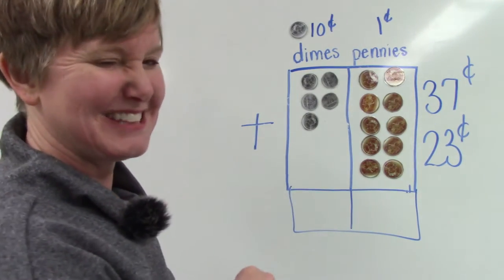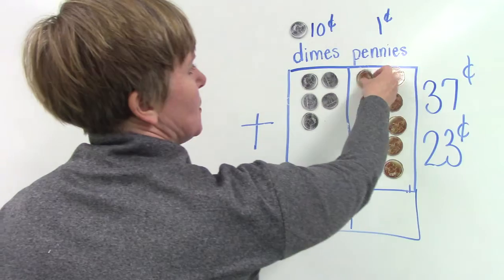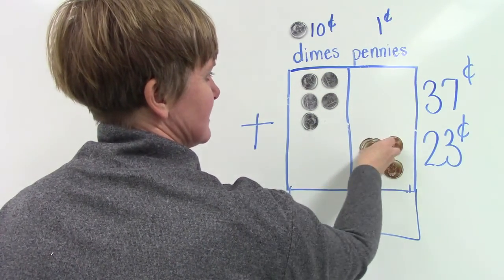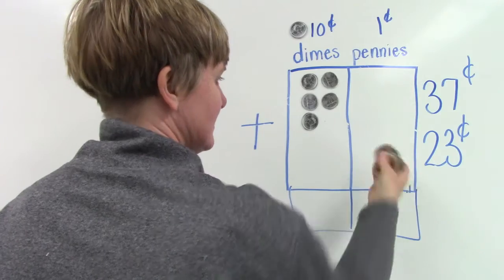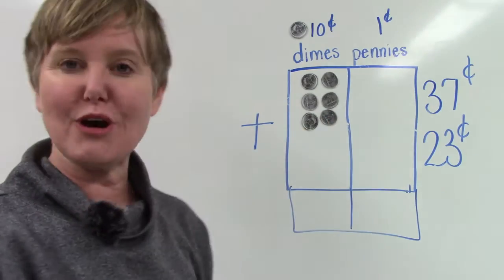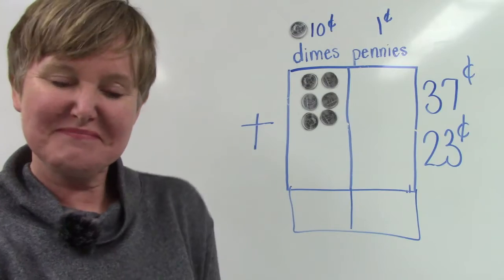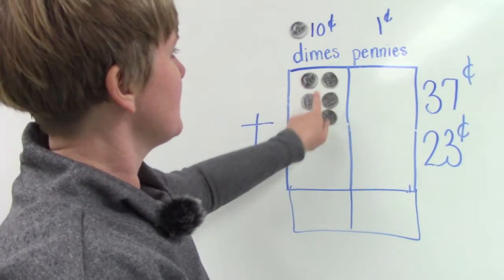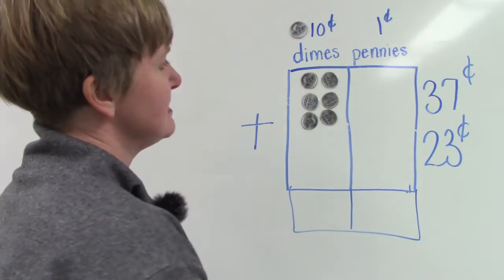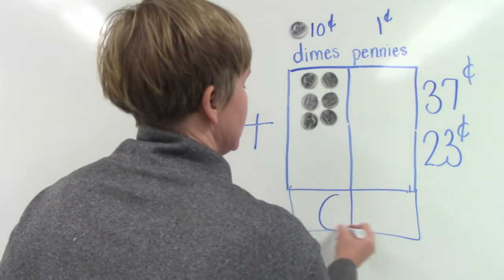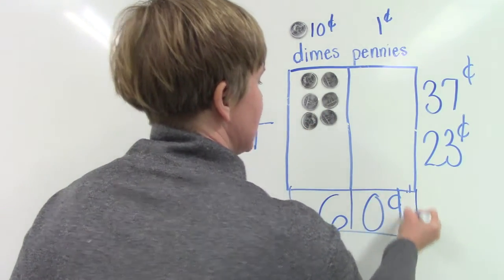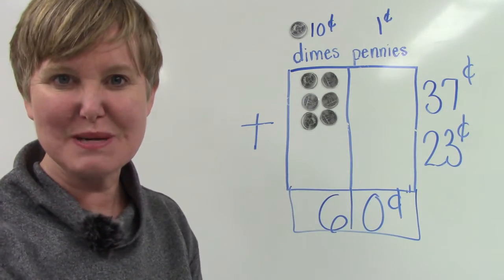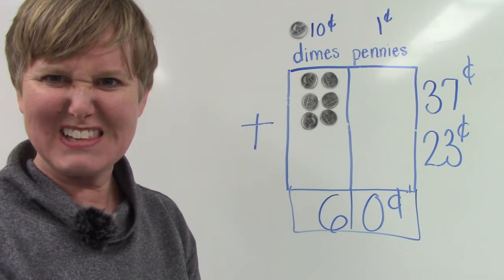Do I have enough? 1, 2, 3, 4, 5, 6, 7, 8, 9, 10. I do! I can put a dime on that side. Now let's count what we have: 10, 20, 30, 40, 50, 60. We have 60 cents - that is zero pennies and six dimes.